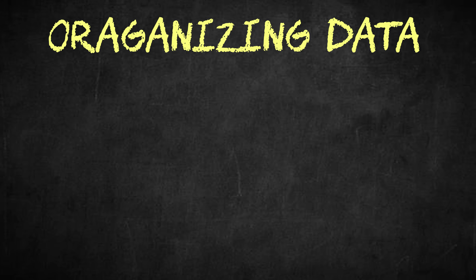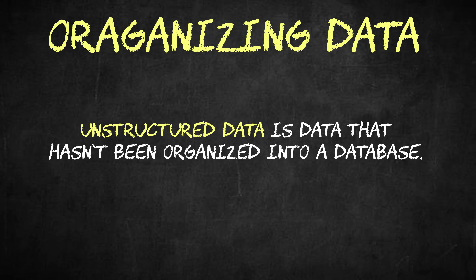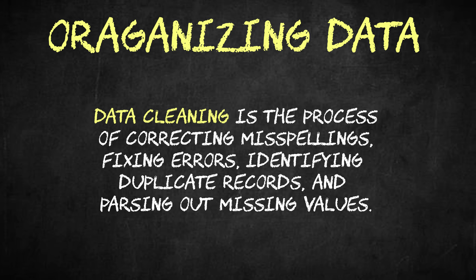Another basic way that a data scientist can create value from data is by organizing it. The vast majority of data in the world is unstructured, meaning that it hasn't been organized into a database. Some data scientists can transform this unorganized data into a structured format, making it far easier for other people to analyze. As part of this process, they can also clean the data by correcting misspellings, fixing errors, identifying duplicate records, and parsing out missing values. A lot of these tasks are handled by data engineers these days, but they still fall under that broader data science umbrella.